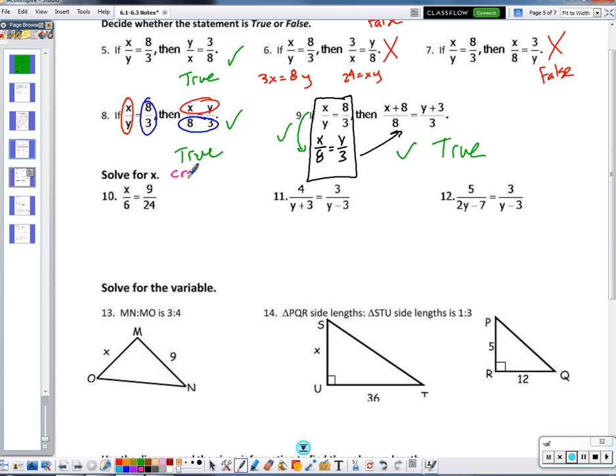Cross-product. So cross-product means X times 24 is 24X. 9 times 6 is 45. And when I divide 45 by 24, I end up with either a decimal or a fraction. 9 times 6 is not 45. It's 54. I've got my numbers mixed up. 54 divided by 24? 2.25?